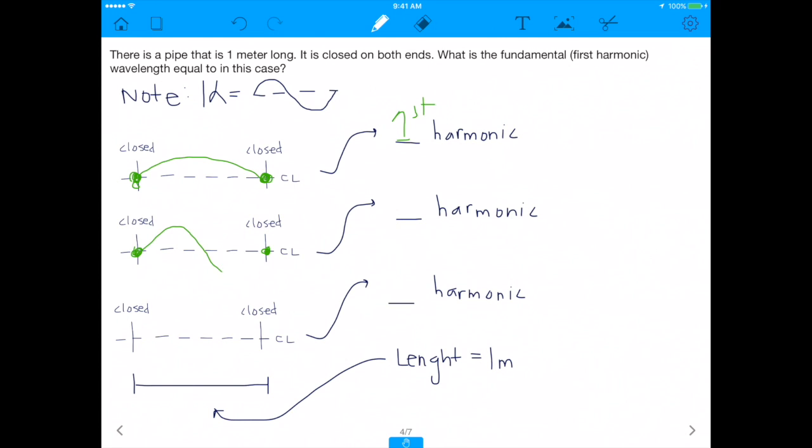Because the second way you can do it, the second way is you can draw it like this. And you'll see that in the process, we added a new node in the middle, but we still technically started with a node and we end with a node. And this is the second most simple way to do it. And this is known as the second harmonic.